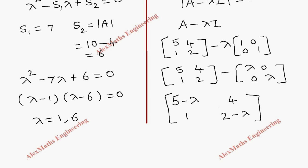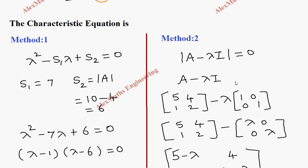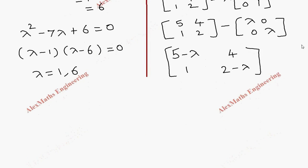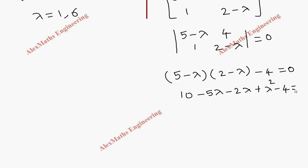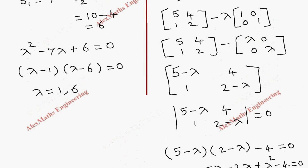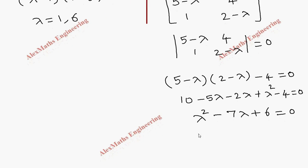When we subtract, the matrix becomes [5 minus lambda, 4; 1, 2 minus lambda]. We could have written this straight away by subtracting lambda in the leading diagonal. Now setting the determinant equal to zero: (5 minus lambda)(2 minus lambda) minus 4 equals zero. Expanding: 10 minus 5 lambda minus 2 lambda plus lambda squared minus 4 equals zero, which gives lambda squared minus 7 lambda plus 6 equals zero.